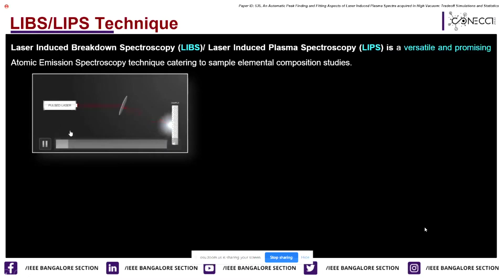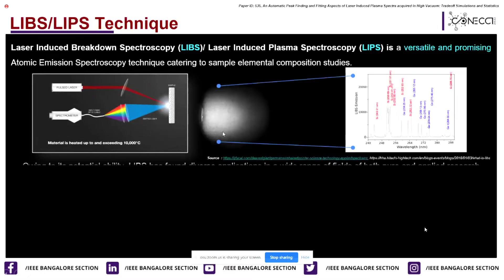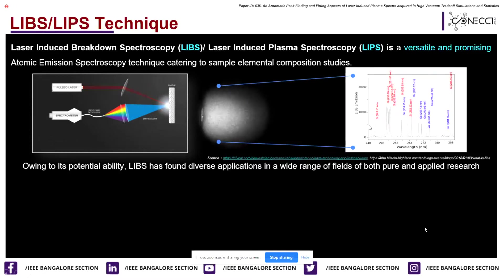As seen in this video, principally in this technique, a high-energy focused laser pulse flashing in red color creates a highly luminous hot plasma plume, which is collected by means of a spectrograph, wherein the response is registered as a function of wavelength or frequency, generally termed as a spectrum, as you can see on the right-hand side figure.